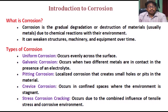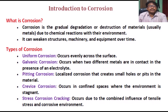Types of corrosion: Uniform corrosion occurs evenly across the surface. Galvanic corrosion occurs when two different metals are in contact in the presence of an electrolyte. Pitting corrosion is localized corrosion that creates small holes or pits in the material. Crevice corrosion occurs in confined spaces where the environment is stagnant. Stress corrosion cracking occurs due to the combined influence of tensile stress and a corrosive environment.